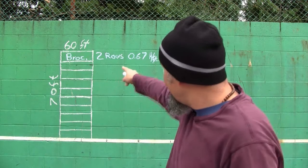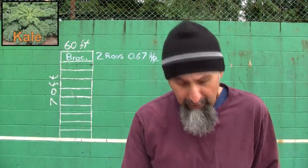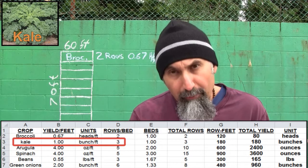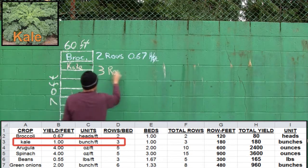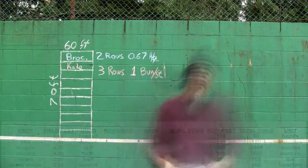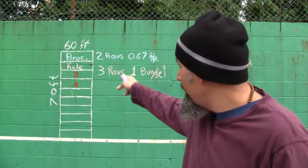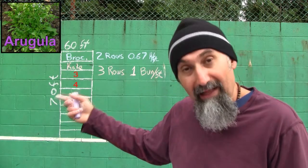In the second bed, we're going to plant kale. The units for kale are one bunch per foot, and we can put in three rows per bed.